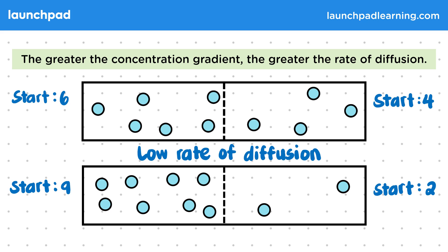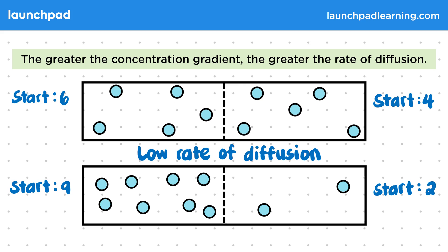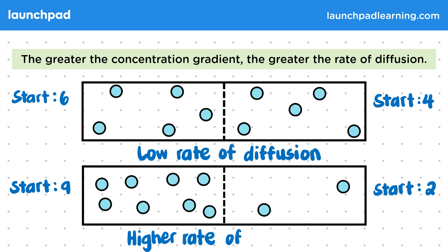Remember that since rate is a number you shouldn't say 'slower rate of diffusion' but instead 'lower rate of diffusion' — a number can't be slow. In the bottom box, starting with nine particles on the left and just two on the right gives a greater concentration gradient, and therefore we would see a higher rate of diffusion.